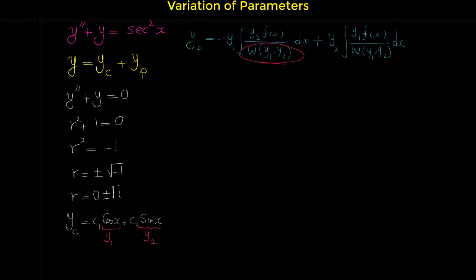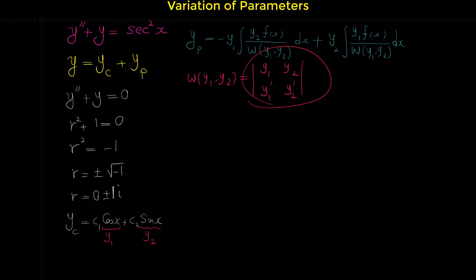The Wronskian of y1 and y2 can be calculated from this formula. Suppose y1 and y2 are two functions — put them in the first row of a 2 by 2 determinant, and their derivatives in the second row. To evaluate the determinant, multiply y1 by y prime 2, minus y2 times y prime 1. This is the formula for the Wronskian of two functions.